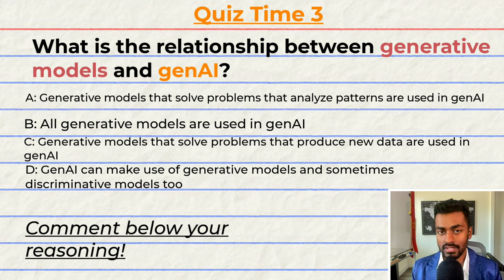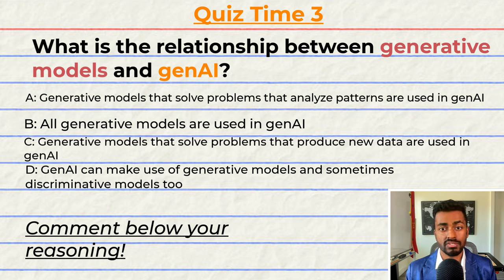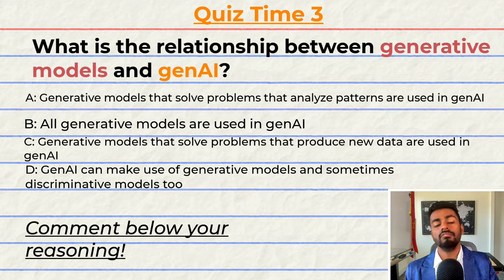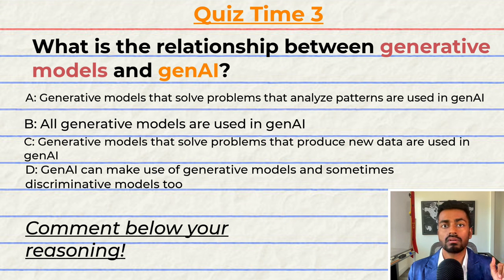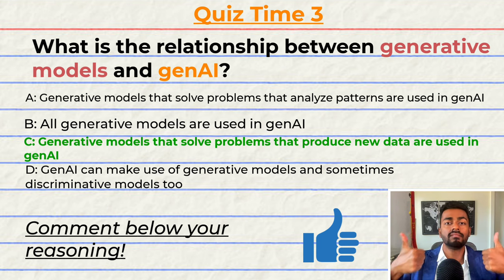Quiz time! What is the relationship between generative models and Gen AI? A: Generative models that solve problems that analyze data patterns are used in Gen AI. B: All generative models are used in Gen AI. C: Generative models that solve problems that produce new data are used in Gen AI. Or D: Gen AI can make use of generative models and sometimes discriminative models too. Note that multiple options may be correct. The correct answer is C. Can you tell me why? Give your reasons in the comments below. And if you think I deserve it, please do consider giving this video a like.